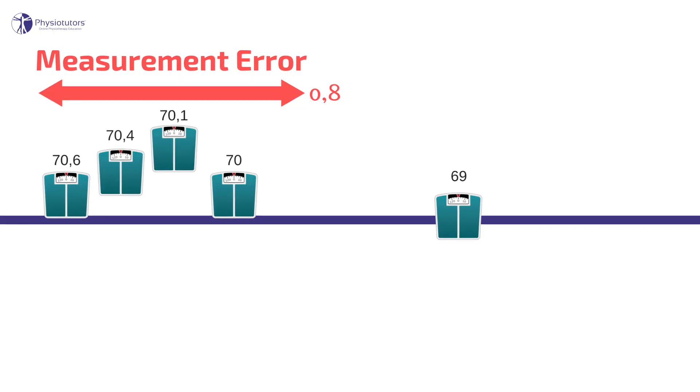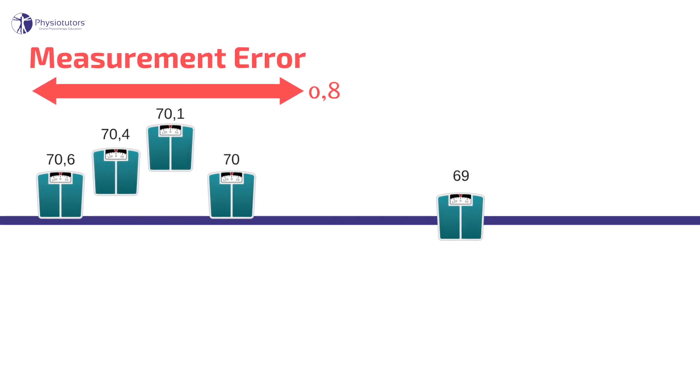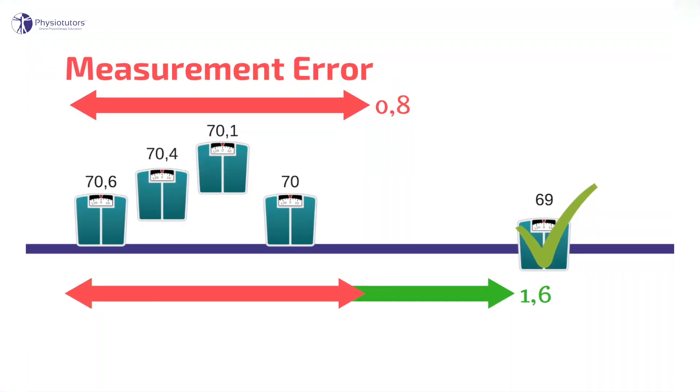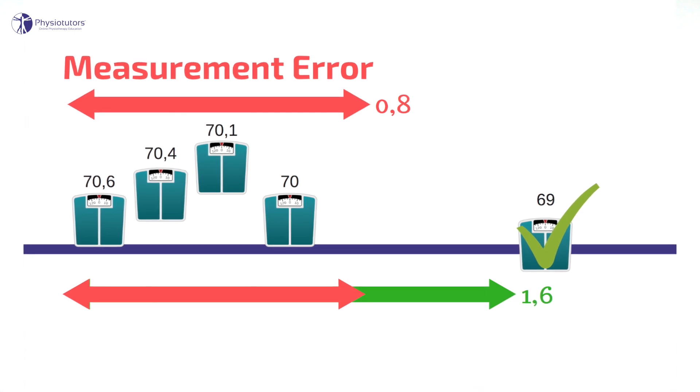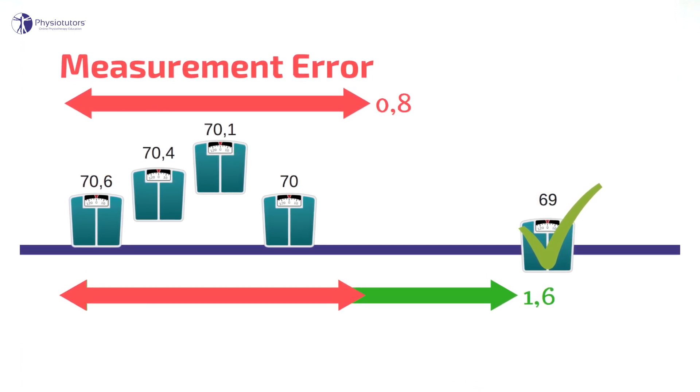So in order to know if the person has really lost weight over these five days, we have to know how big the measurement error is. If the measurement error is bigger than the differences between measurements, then we cannot really say that the person has lost or gained weight. On the other hand, if the measurement error is smaller than the differences between those five measurements, then we can say that the person has really lost or gained weight.